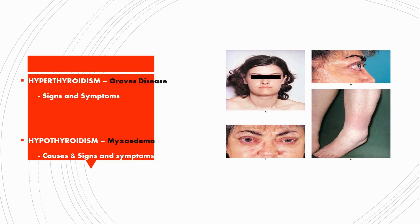Next are some hypersecretions and hyposecretions of thyroid hormones, which include hyperthyroidism and hypothyroidism — namely Graves' disease and myxedema. Short notes on these diseases are important: their causes, symptoms, and treatment plans should be included in your answer.